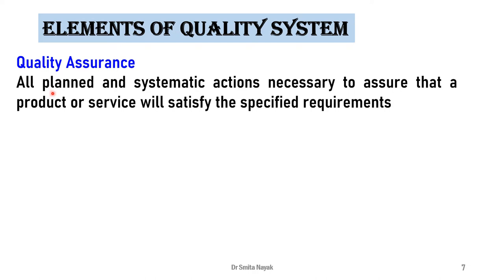Coming to the third element, that is quality assurance. All planned and systematic actions necessary to assure that a product or service will satisfy the specified requirements. Quality assurance mainly deals with laying down systems that will ensure that the product or the service will meet the specified requirements. If you want to learn more about quality assurance, you can open any standard textbook and read up about it.